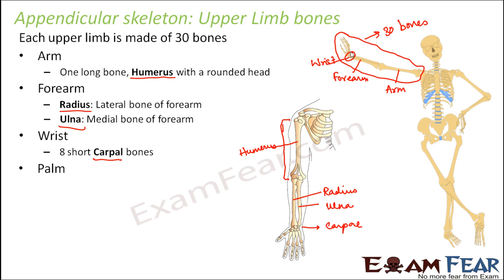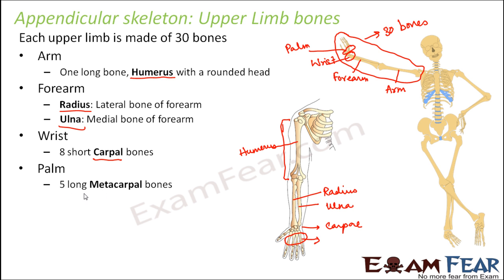Next is the palm — this portion of the hand. The palm is made up of five long metacarpal bones. These bones are quite long. There are five metacarpal bones, one for each finger, connecting the wrist to each finger.